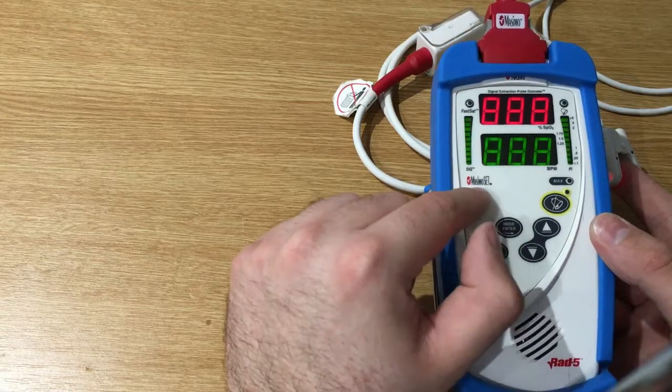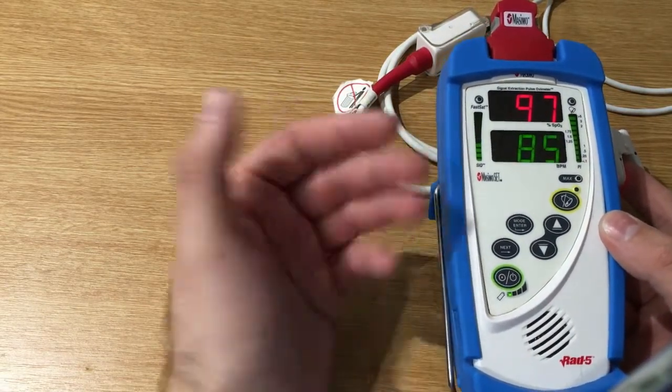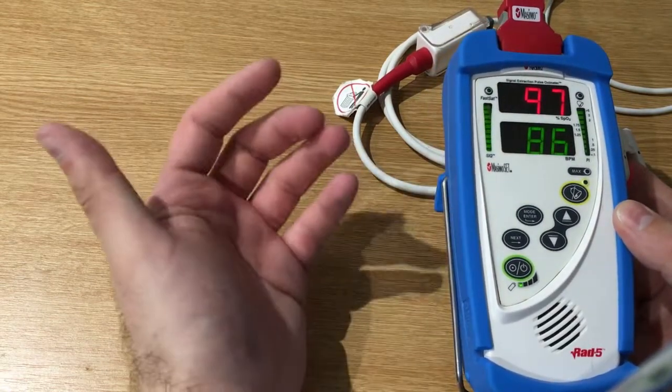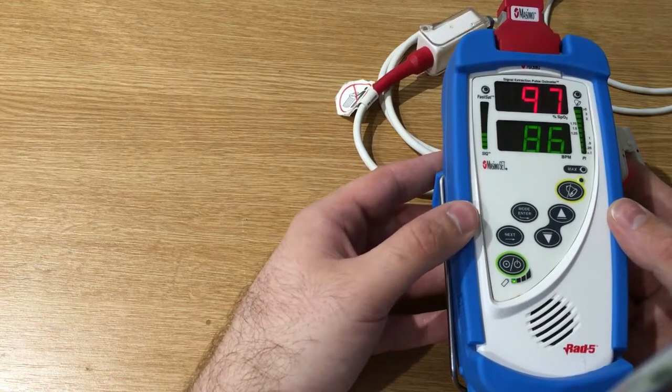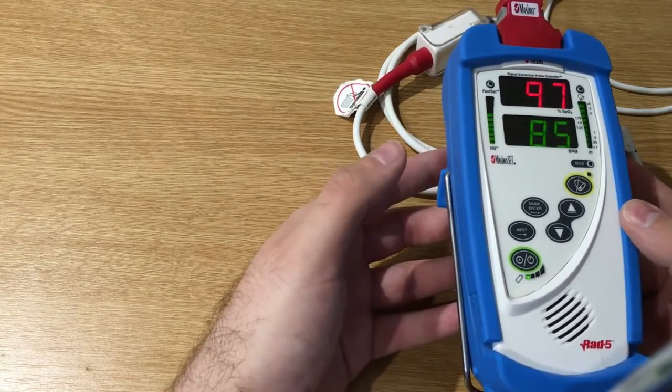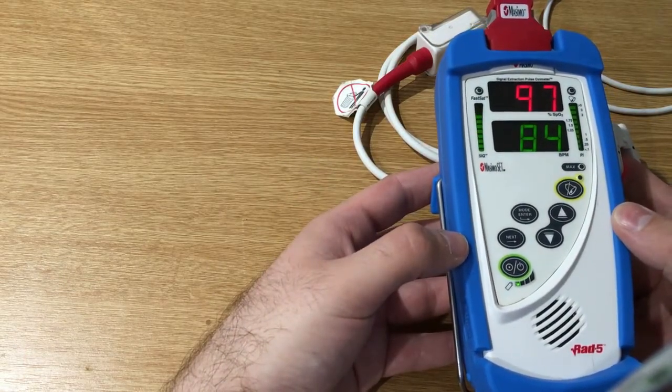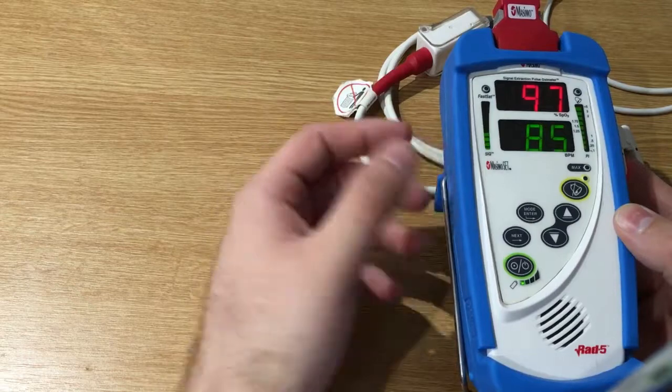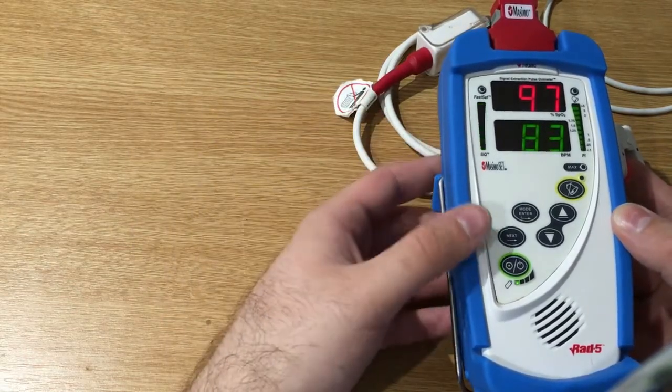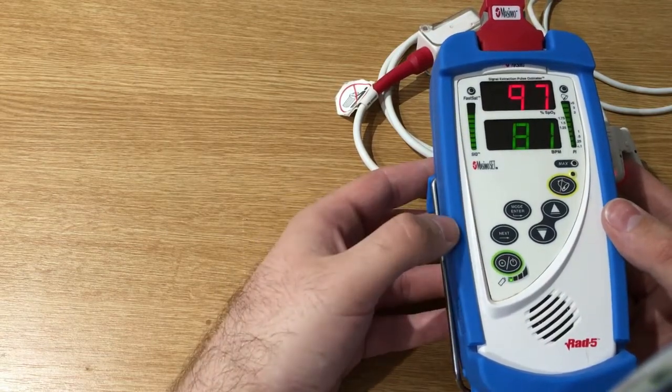Here, as you can see, there is the Masimo Signal Extraction Technology logo. The Signal Extraction Technology uses five parallel algorithms for SP02 calculation. Most pulse oximeters assume that the arterial blood is the only one that's moving, whereas this pulse oximeter with the SET technology can cancel the noise produced by the venous blood in order to give an accurate pulse rate and SP02 reading, even if the patient is moving.